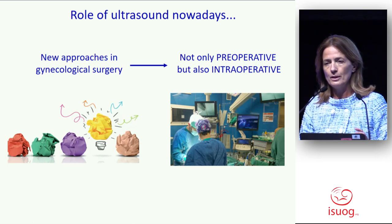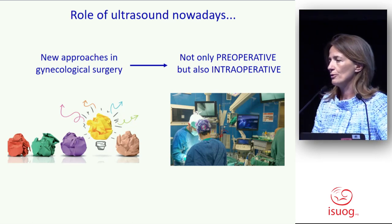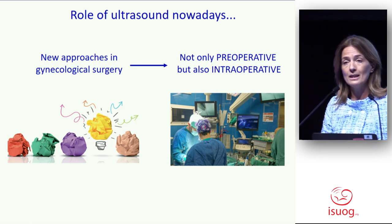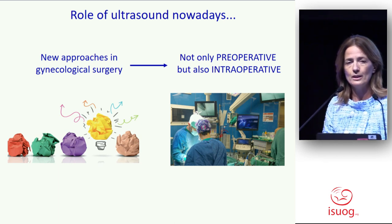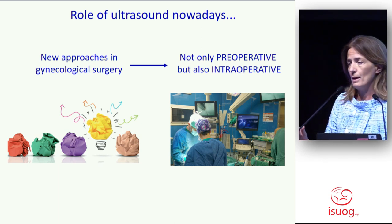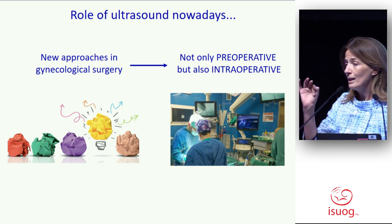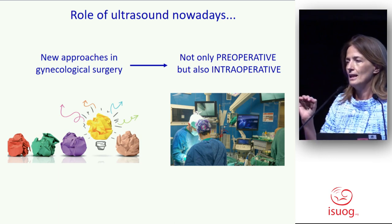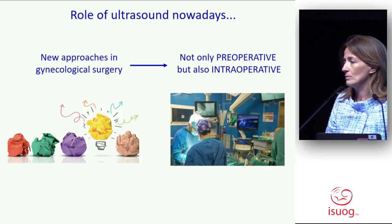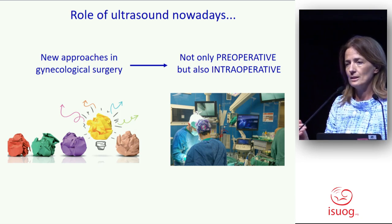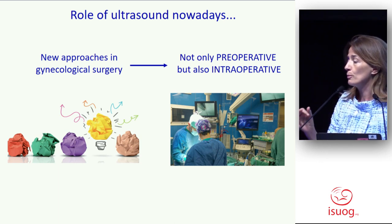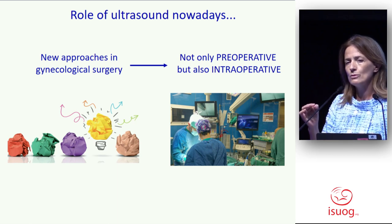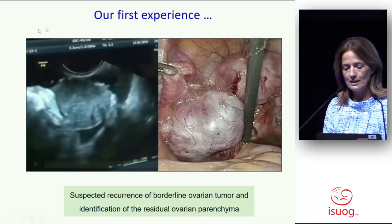We learned during the years a lot, for instance, about borderline ovarian tumors. We understood how to make a suspicion of borderline ovarian lesion, how to follow up our patients. We are able to detect very small lesions within the ovary, and we understood the growth rate. Now, a clinical question, a clinical challenge: when we decide to remove a recurrent lesion for borderline during laparoscopy, how can we find it? How can we do conservative surgery?